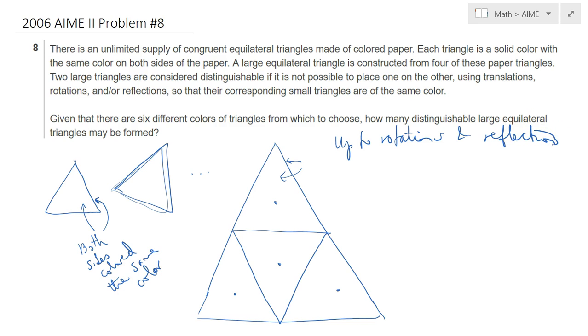Two colorings will be considered the same, or two big triangles will be considered the same, if you can obtain one triangle from the other by just simple rotations or reflections or a combination of the two. This is a typical application of the Burnside Lemma.